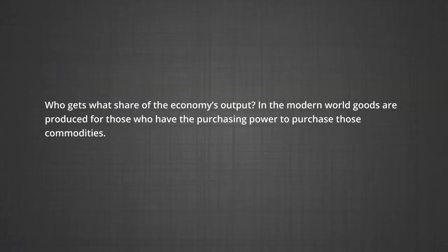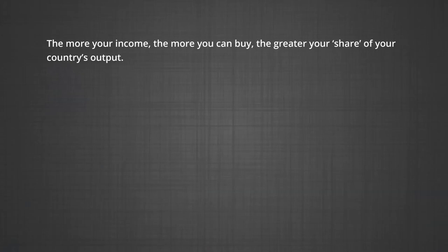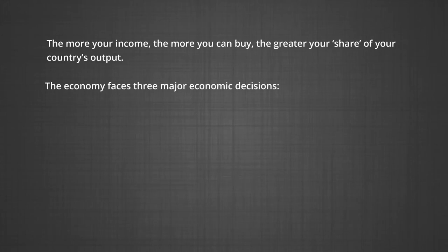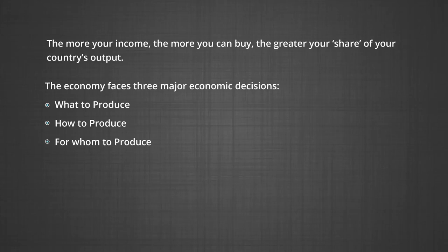Another question that arises is: for whom are the goods to be produced? Every society produces goods so that people can eat, wear, use or otherwise consume them. Who gets what share of the economy's output? In the modern world, goods are produced for those who can pay for them or who have the purchasing power for these commodities. Think of your country as one giant mall — how much of the goods that are available can you consume? Notice that you can only consume what you can buy. The more your income, in general, the more you can buy and the greater your share of the country's output. So, the economy faces three basic questions: one, what to produce; two, how to produce; and three, for whom to produce.